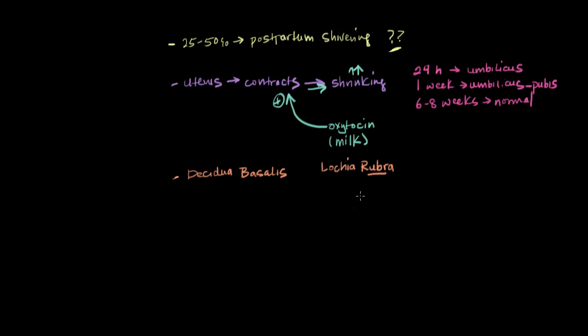So lochia rubra, rubra meaning red. So it's red lochia. And after that, the vaginal delivery becomes very watery, and that's called lochia serosa. And that lochia serosa lasts for about two to three weeks.